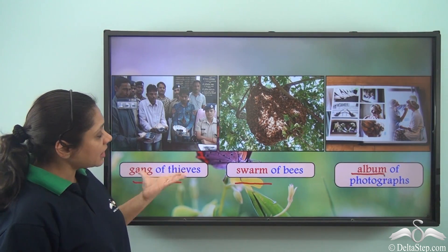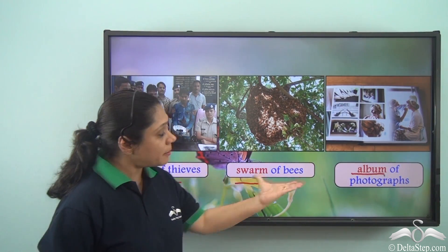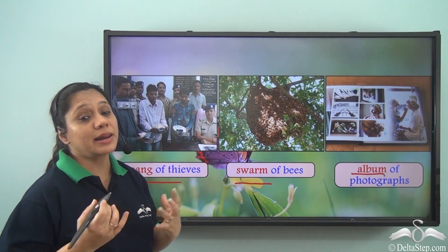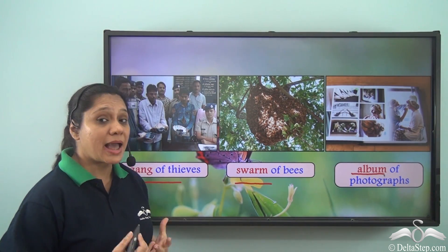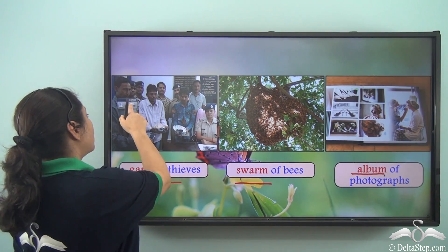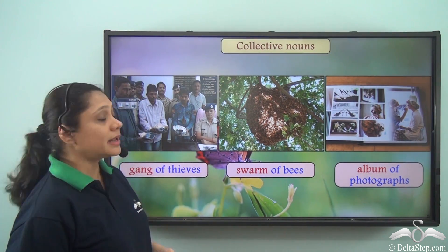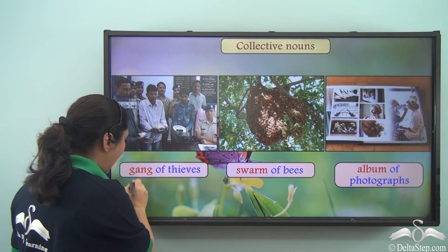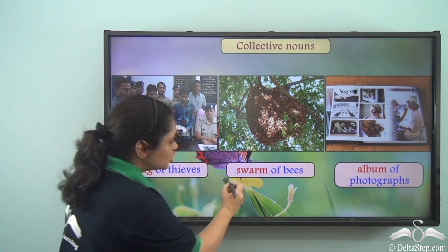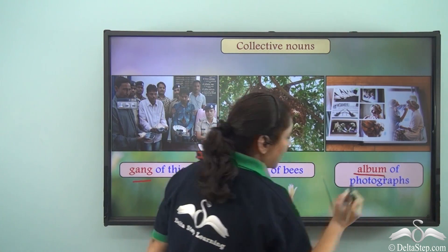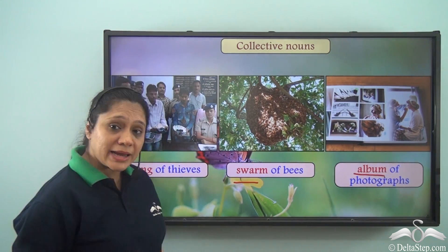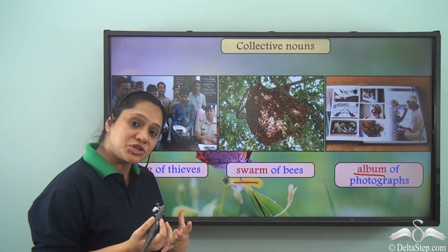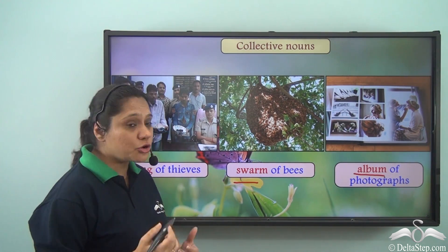So gang, swarm, album show a collection or group — hence they are known as collective nouns. Gang, swarm, and album are collective nouns which show a collection or a group.